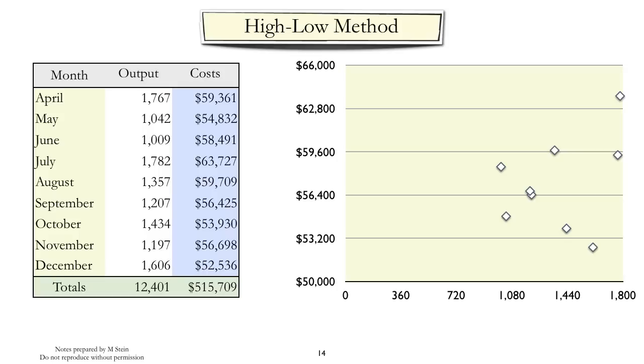In order to use the high-low method, the first thing we have to do is identify the high and the low. The high is the quantity of output which is greatest, 1,782, while the low represents the smallest quantity of output, 1,009.